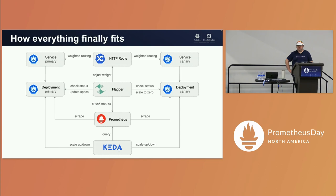Flagger won't be able to route and increase traffic, and KEDA won't be able to scale the deployment if Prometheus is not working. Prometheus — or any other observability tool — is very, very essential to how you implement progressive delivery in your clusters.